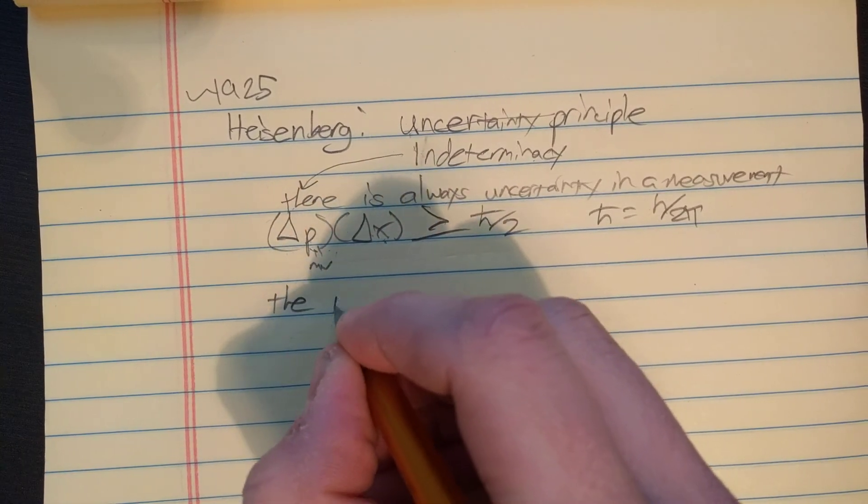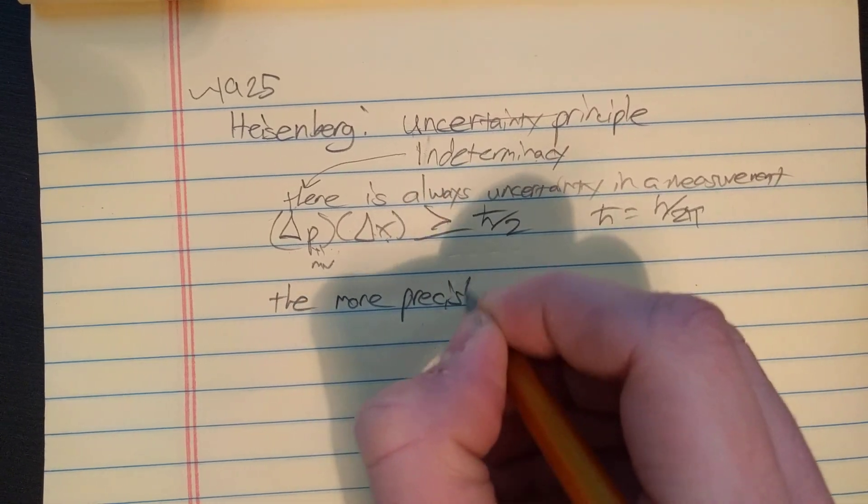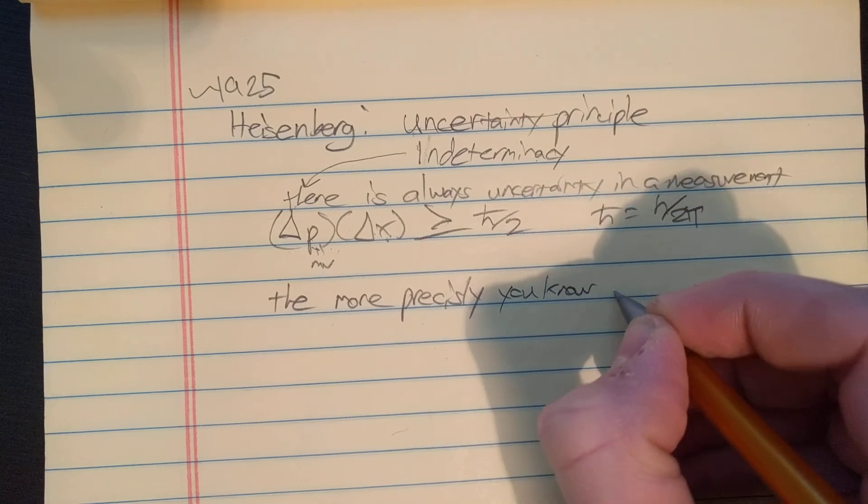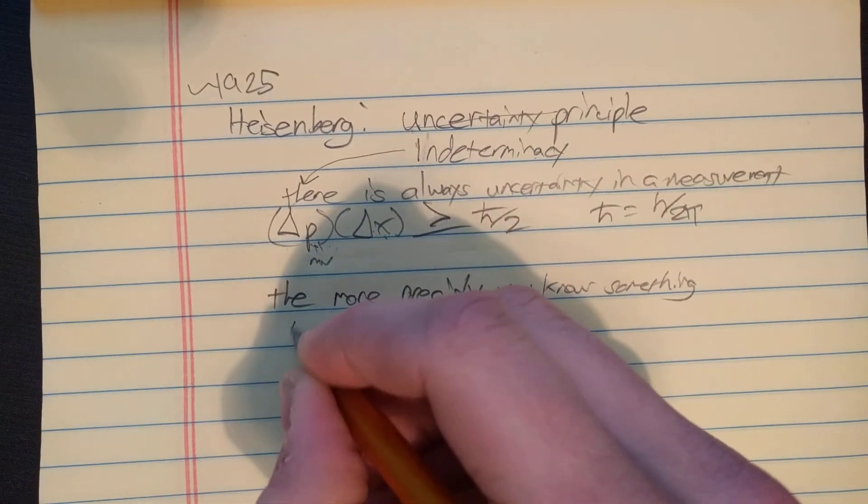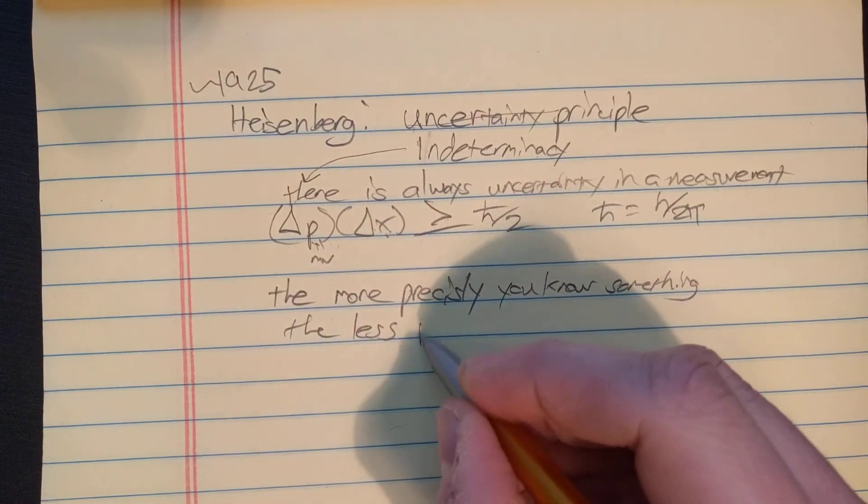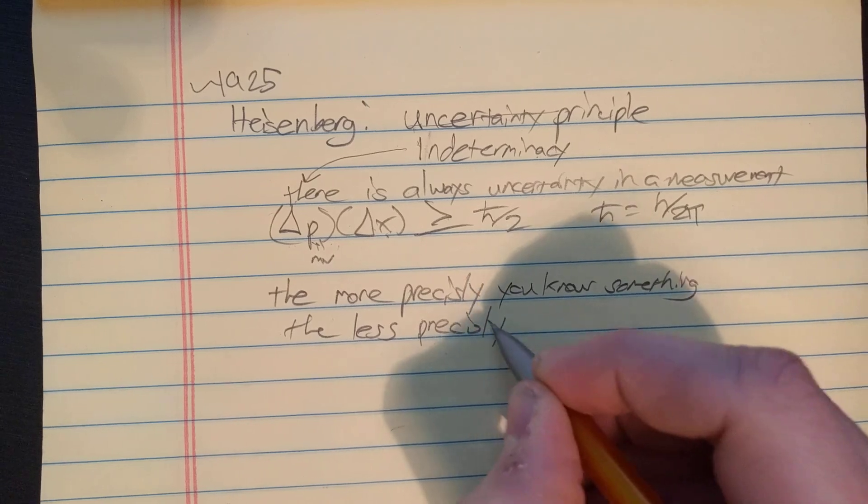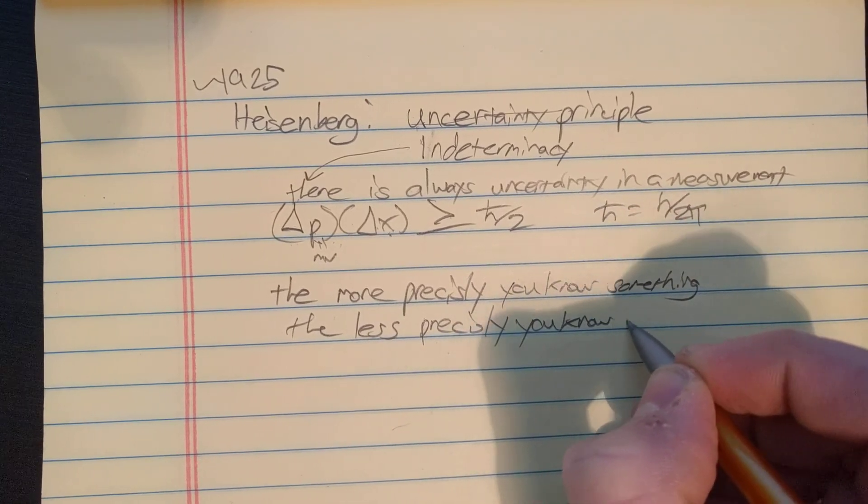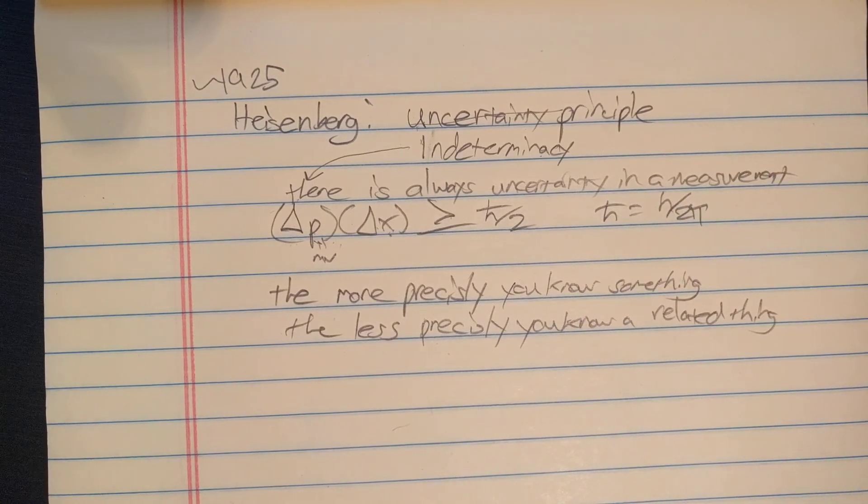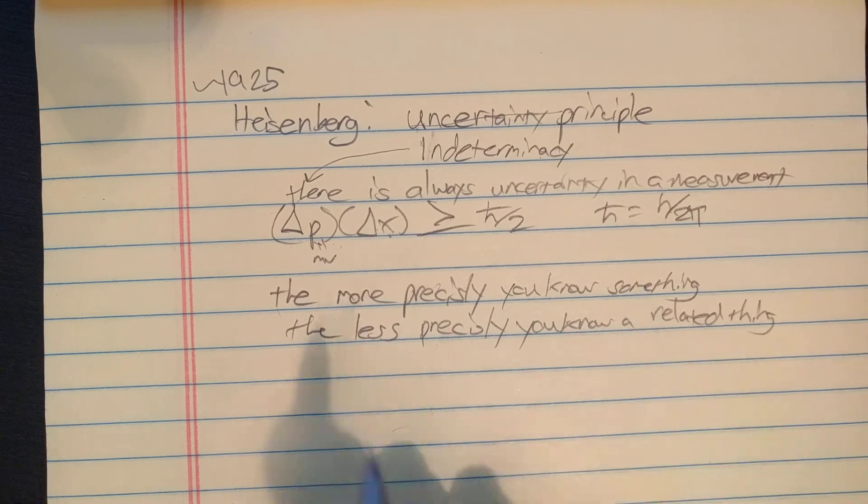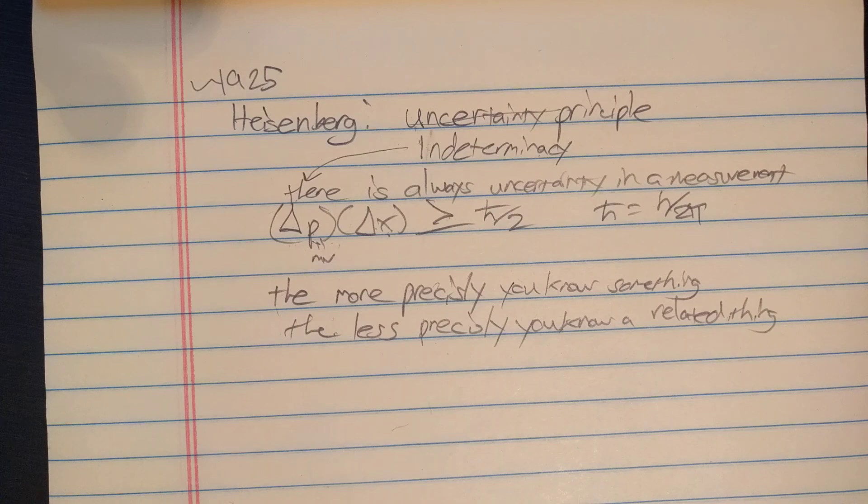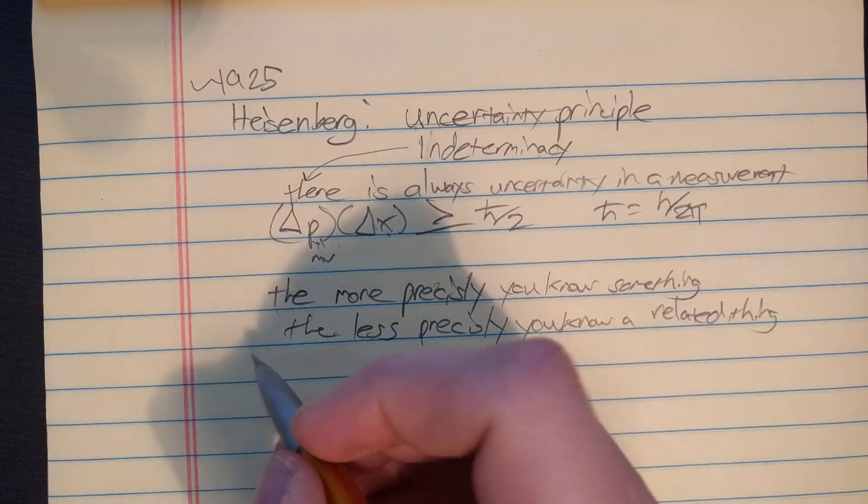In other words, let me restate that. It says the more precisely you know something, the less precisely you know a related thing. Because in our example we said, the more precisely you know the position, the less precisely you know the velocity, and vice versa.